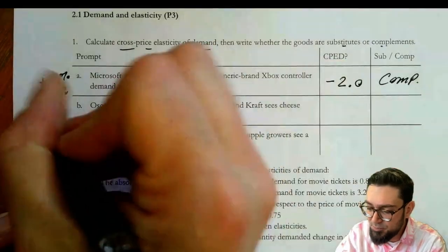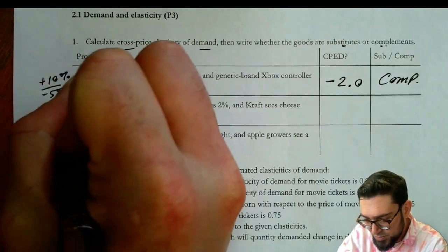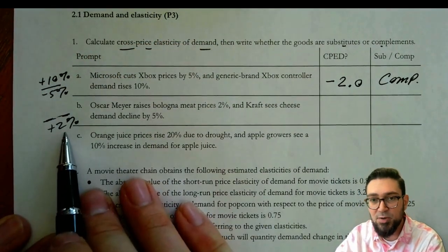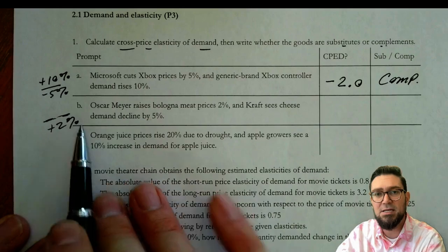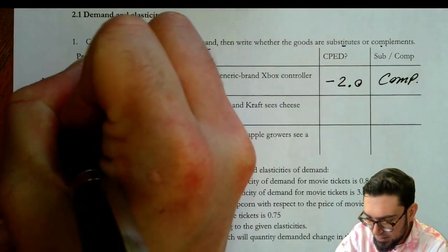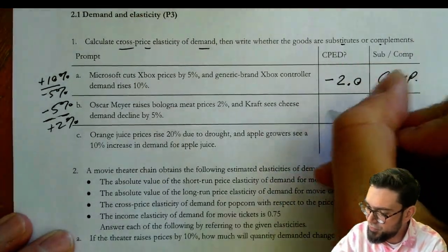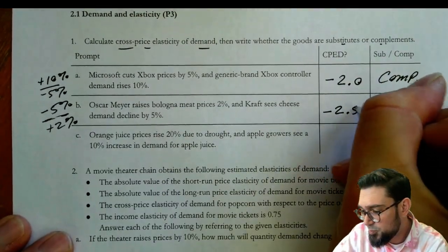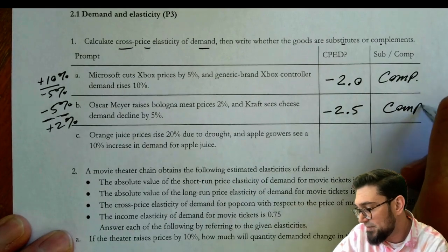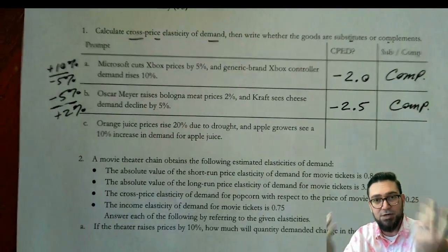Oscar Mayer raises bologna meat prices by 2%. So the price is going to go on the denominator. Kraft sees cheese demand declined by 5%. And so here we have negative 5 over 2 is negative 2.5. Again, a negative value indicates complement. Cheese and bologna.